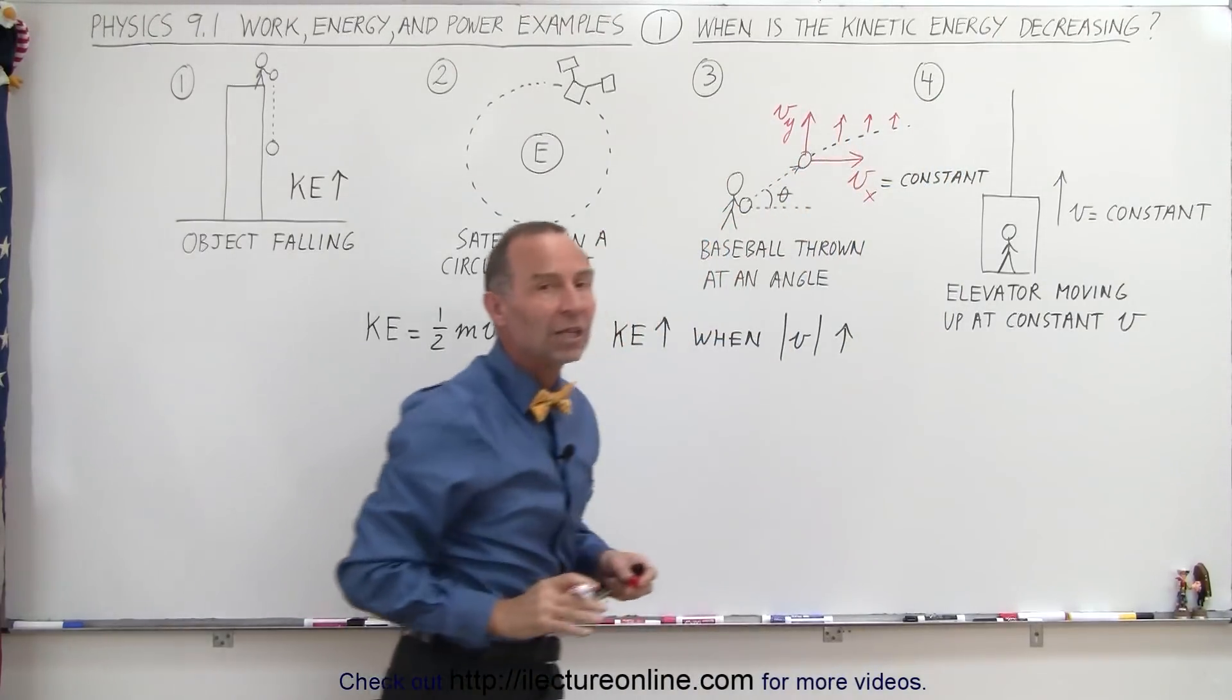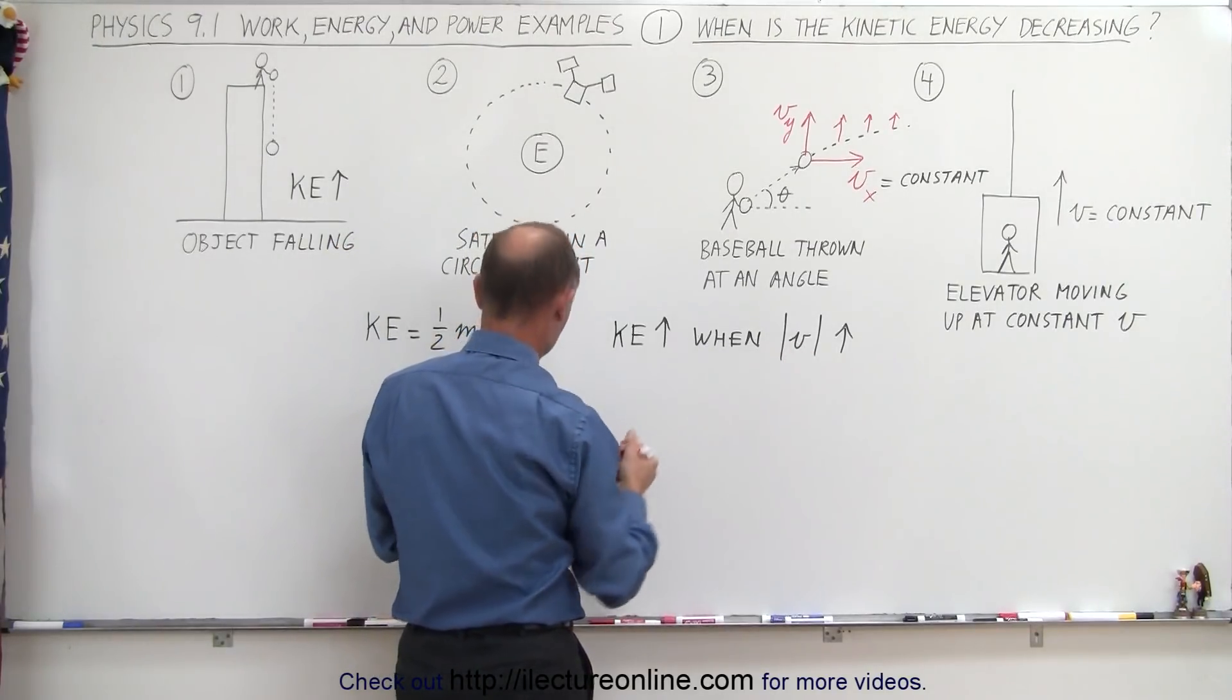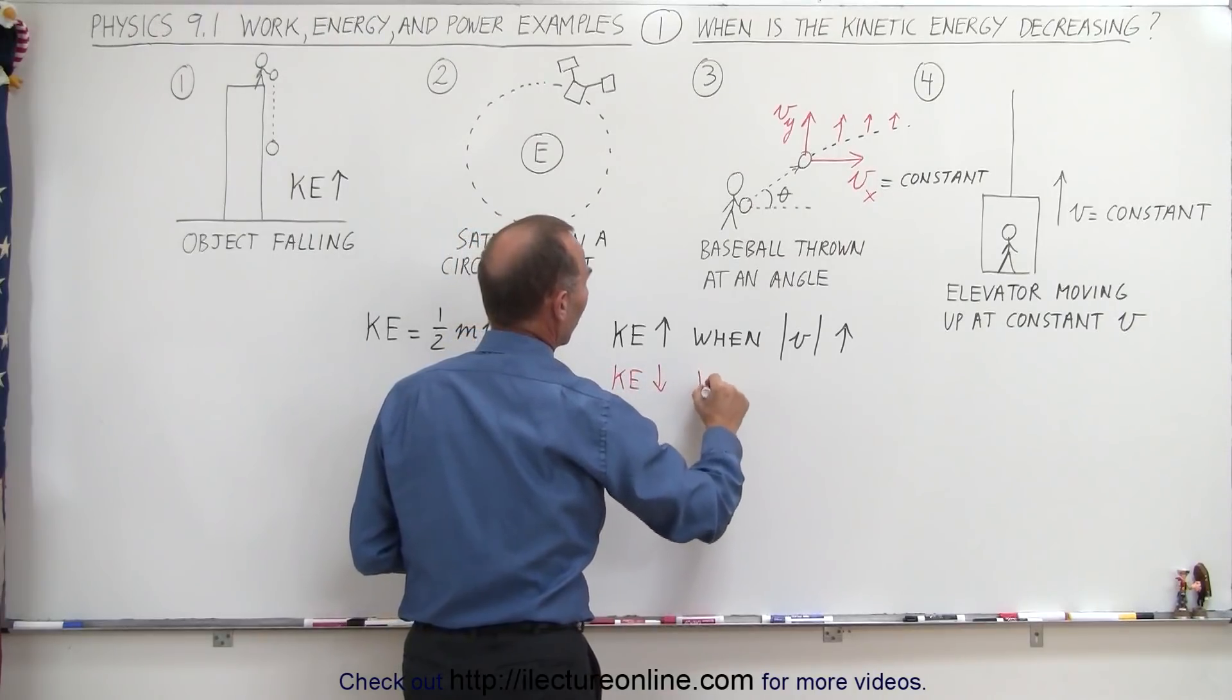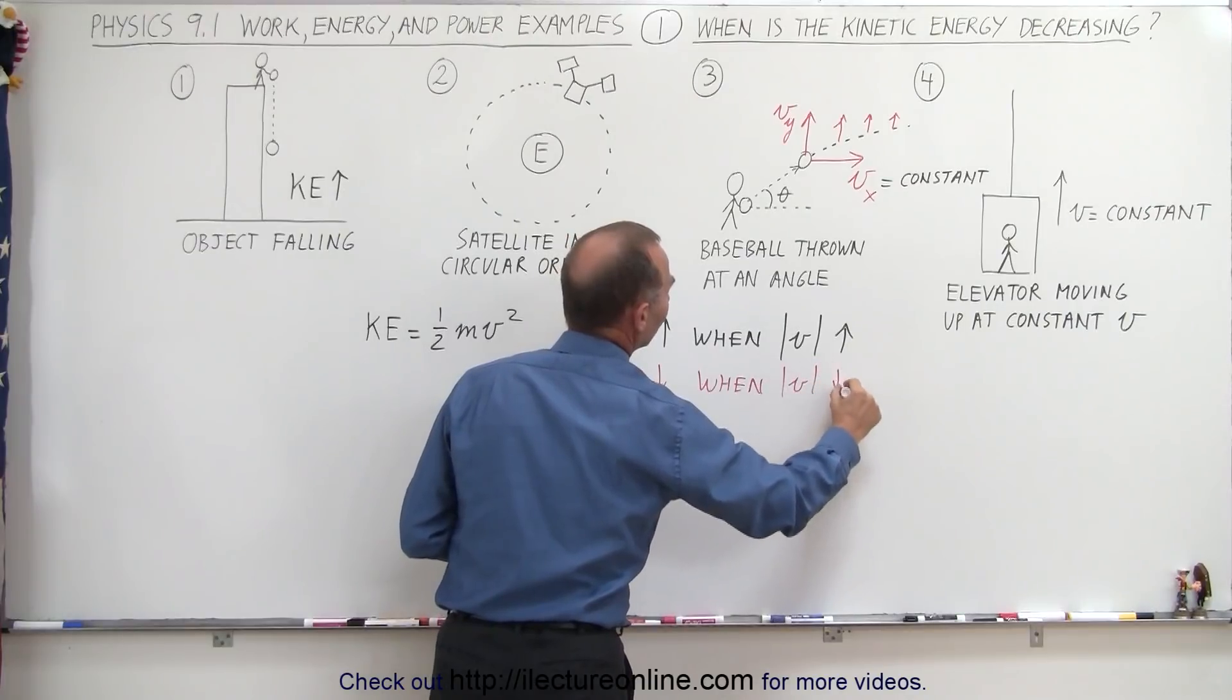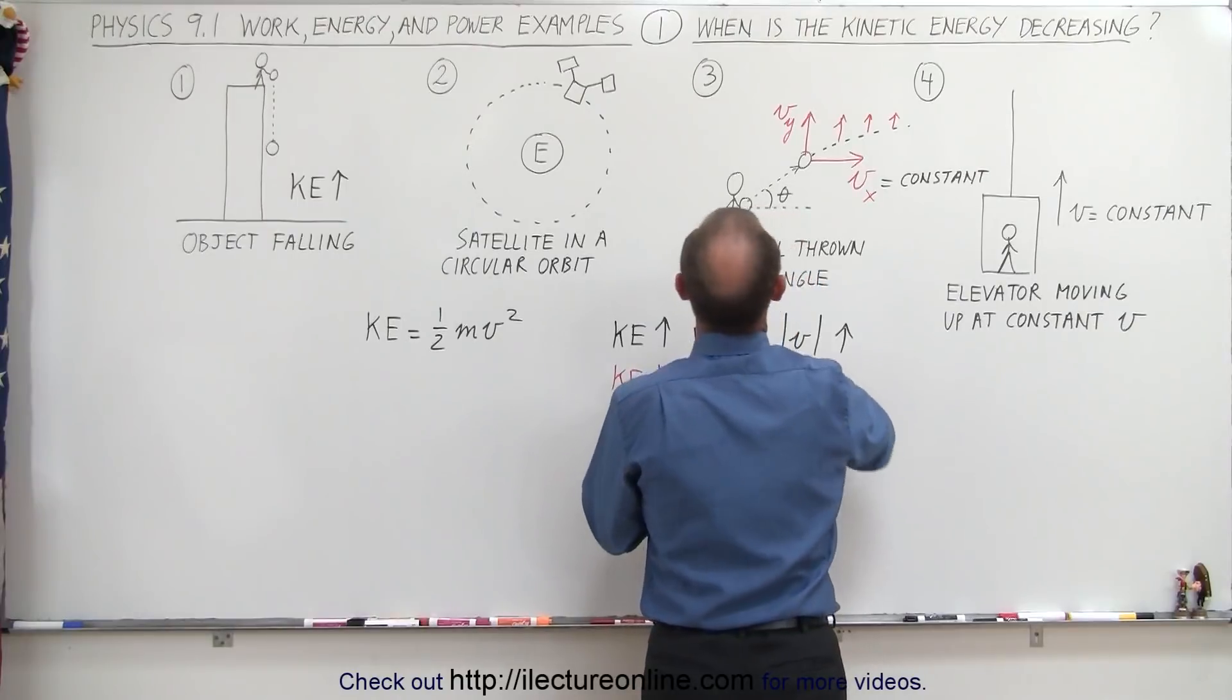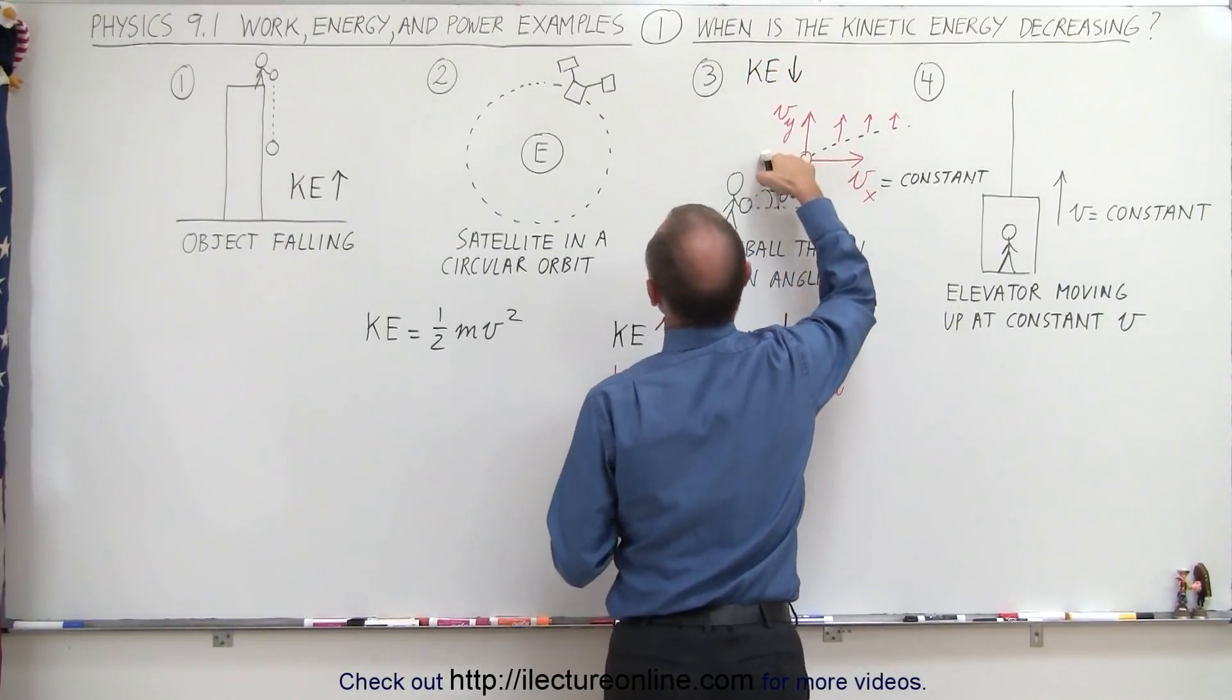And since that component decreases, the total velocity will decrease. Which means that if the total velocity decreases, I guess I should also put down that the kinetic energy will decrease when the absolute value of the velocity decreases. So in this case, we know that the velocity decreases, so we know that the kinetic energy is decreasing right here. So kinetic energy decreases in this case.